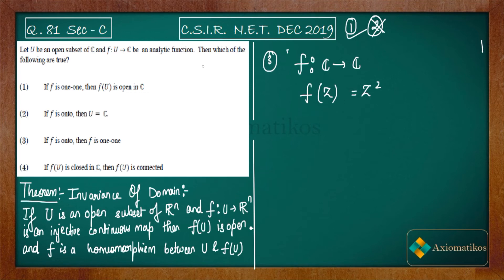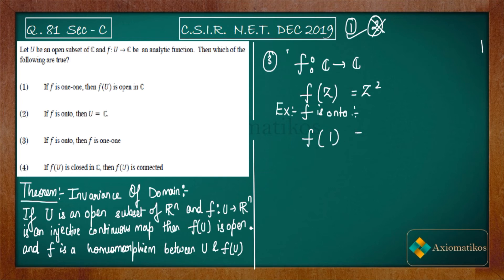The function f(z) = z² is analytic, and U = ℂ is open, so the conditions are satisfied. This function is onto — you can verify that using polar coordinates as a hint. However, it is not one-to-one: for example, f(1) = 1 and f(-1) = 1. So f is onto but not one-to-one, which is a counterexample to option three. Therefore option three is false.